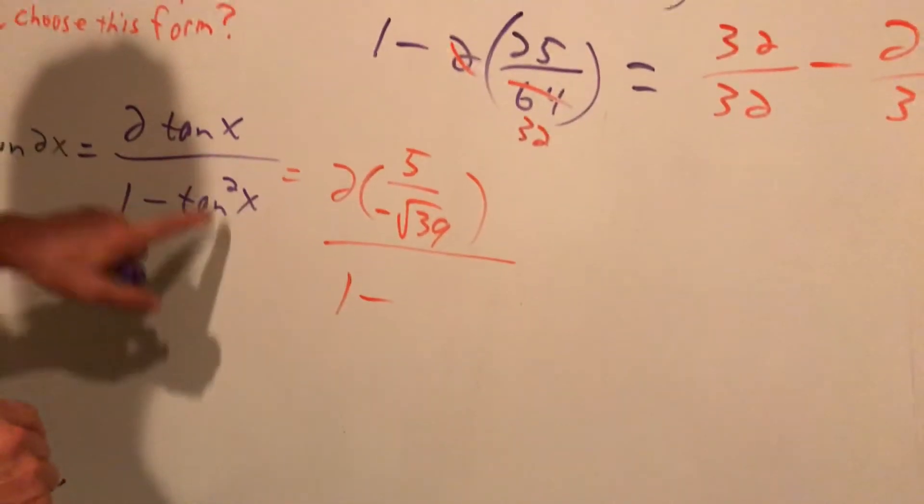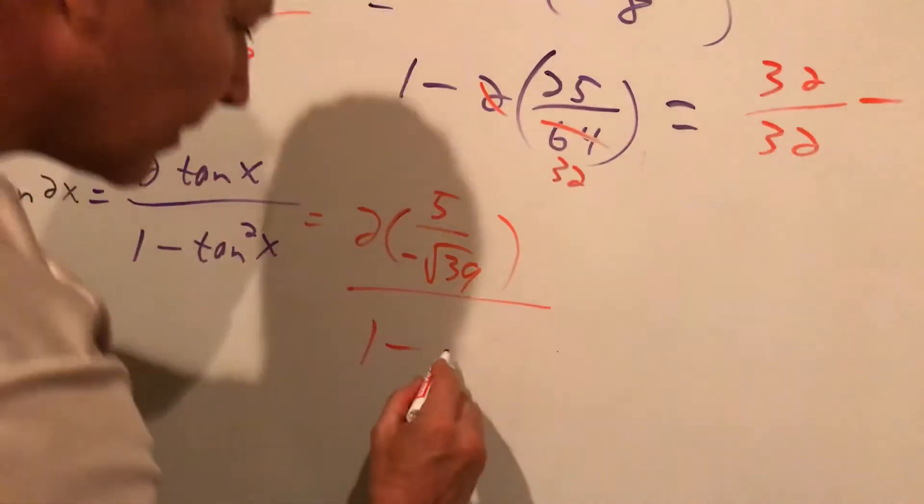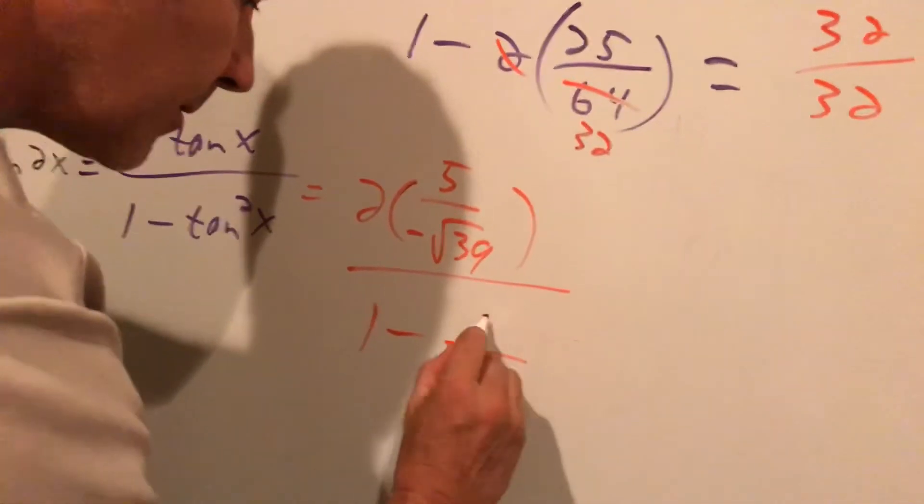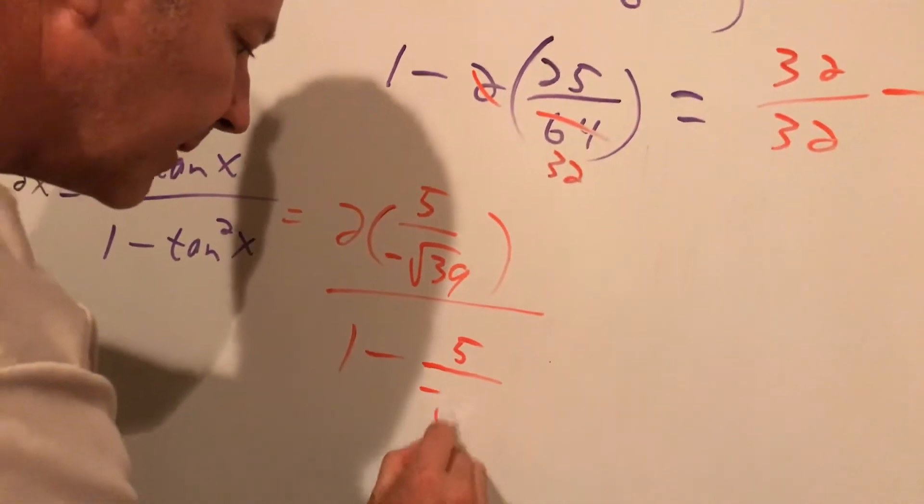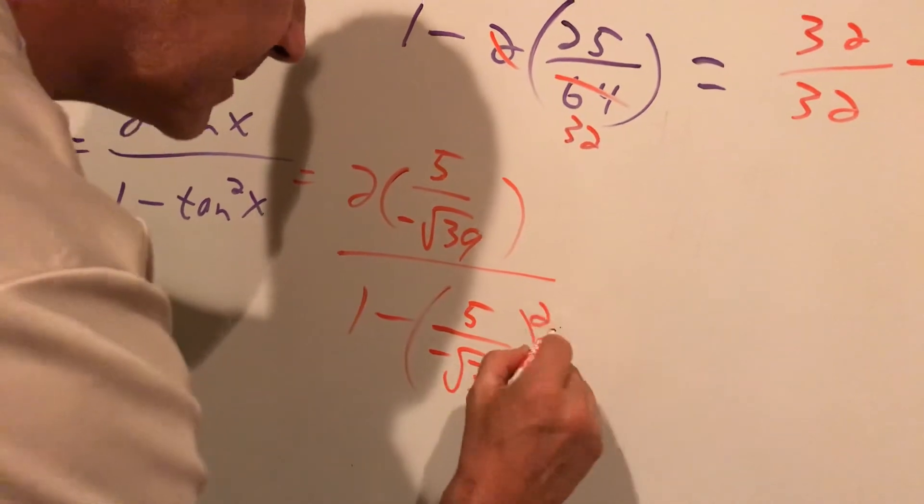1 minus. We just did tangent. This is tangent squared. So it's that same value, 5 over negative root 39, and that is going to be squared.